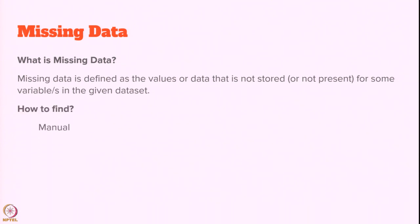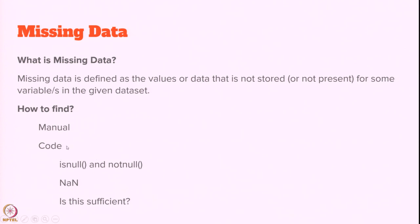How to find missing data? If the dataset is too small, we can find the missing value manually. If it is a little large, we can write code using is-null, not-null, or NaN (not a number) — in pandas you can directly check it. However, these are only useful if you have a limited set of missing values or the data size is too small.